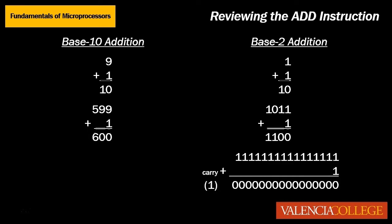Now let's look at two problems using larger numbers. In base ten we have 599 plus one equals 600, and in binary we have 1011 plus one equals 1100.